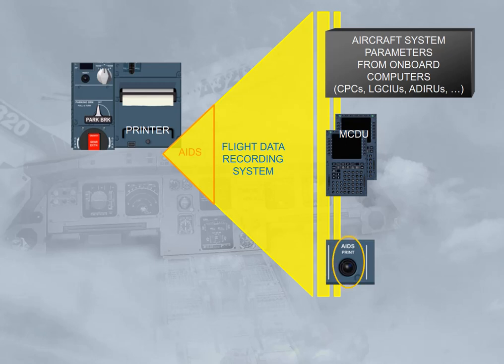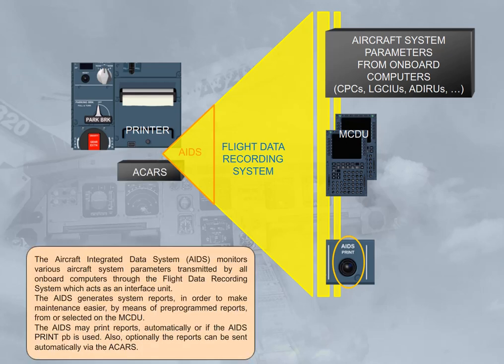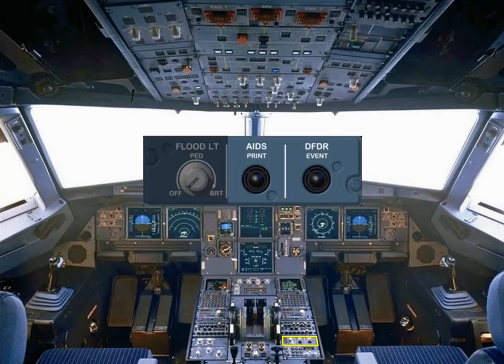Also, optionally the reports can be sent automatically via the ACARS. On the pedestal, there is the AIDS print push button, which can be used for an immediate printing of a specific report depending on the flight phase. The crew may also use the MCDU to select another report for immediate printing.